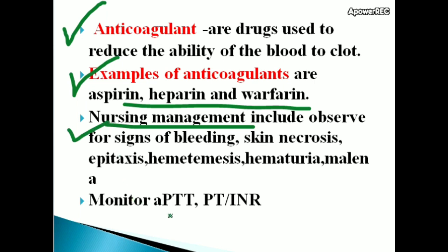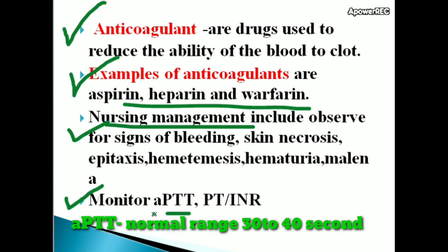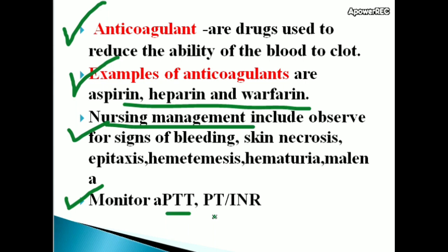Also monitor APTT, PT, and INR. APTT stands for activated partial thromboplastin time — a test that helps evaluate a person's ability to appropriately form blood clots. Normal APTT reference range is 30 to 40 seconds. Normal prothrombin time (PT) is 11 to 13.5 seconds. Normal INR (International Normalised Ratio) is 0.8 to 1.1.